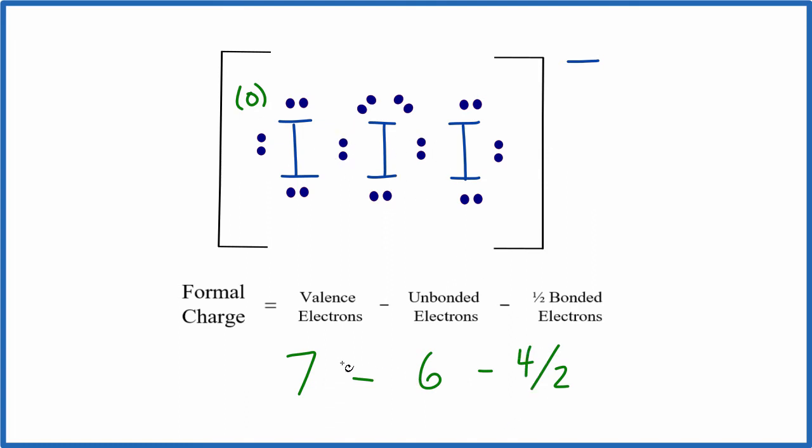So we have 7 minus 6 is 1. 1 minus 2. That equals a minus 1 charge. So we'll put minus 1 right here. And then this iodine and this iodine, they're the same, so we don't need to redo this. We'll just put a 0 right here. And those are the formal charges for I3 minus.